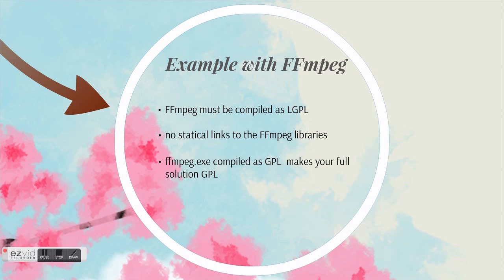Let's see a very simple example — for example, FFmpeg. FFmpeg, possibly everybody knows what it is: video, audio, streaming libraries for everybody. It's a free library that can be compiled as LGPL and GPL. Make sure that it's compiled as LGPL. And again, don't do static linking of FFmpeg, only dynamic linking. For example, if you take only ffmpeg.exe, many think it's just a tool you can use and reuse in your source code. However, you should check that ffmpeg.exe is not compiled as GPL, because if it is compiled as GPL and you use it in your software, your software is GPL. Very simple.